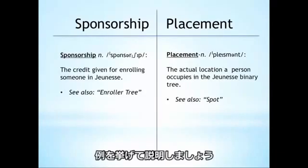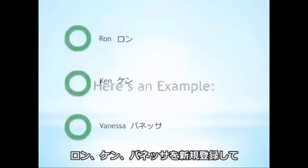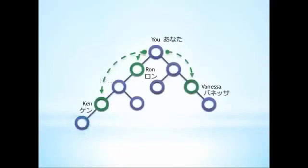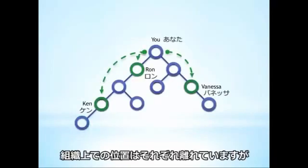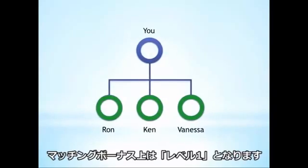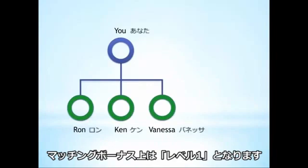Here's an example. Let's say you enroll Ron, Ken, and Vanessa, and they end up placed in your organization like this. Even though they are placed one or more levels deep in your group, because you enrolled them, that puts them on the first generation of your enroller tree.